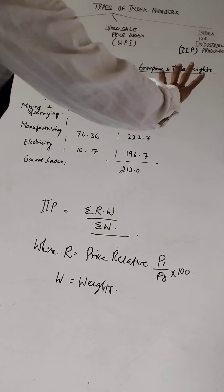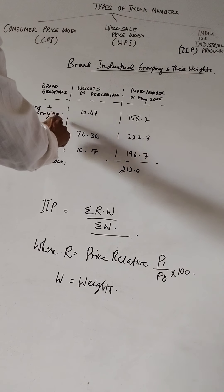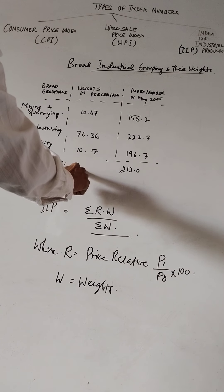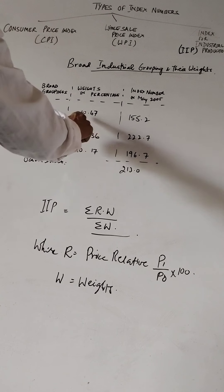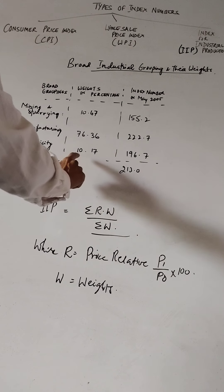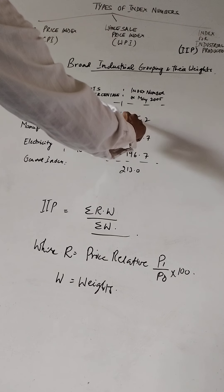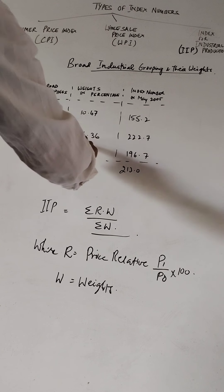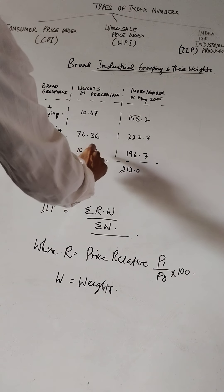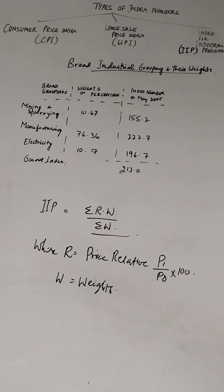Broadly, industries have been grouped and their weights have been given. The broad groupings are mining and quarrying, manufacturing, and electricity, with weights determined in percentage: mining and quarrying 10.47%, manufacturing the maximum at 76.36%, and electricity 10.17%. The index number in May 2005 was given as 155.2 for mining and quarrying, 222.7 for manufacturing, and 196.7 for electricity.